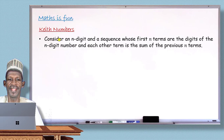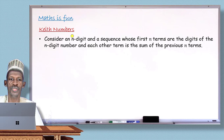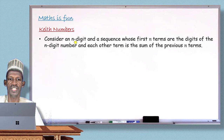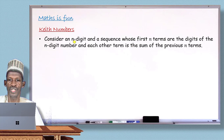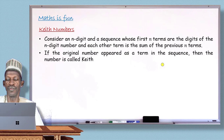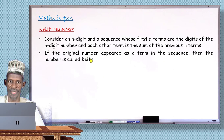To understand case numbers, consider a number with n digits — two digits, three digits, four digits, and so on. You use those digits to form a sequence where the first n terms are the digits of the number. The other terms are obtained by adding the last n terms. As you continue writing more terms, if the original number appears as a term in that sequence, then that original number is called a case number.